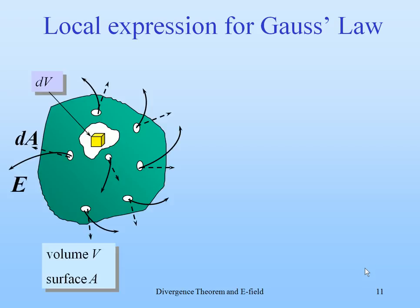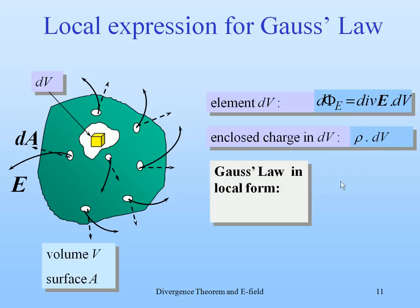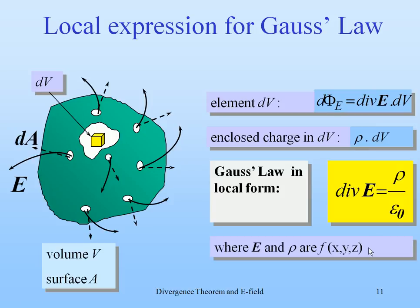Well, now we arrive to the local expression for Gauss law. The element is given here, and the enclosed charge in that volume element, of course, is given by rho, the charge density, times dV. And thus, we can write Gauss law in local form is the divergence of E, that is rho divided by epsilon naught. And E and rho are functions of the coordinates.